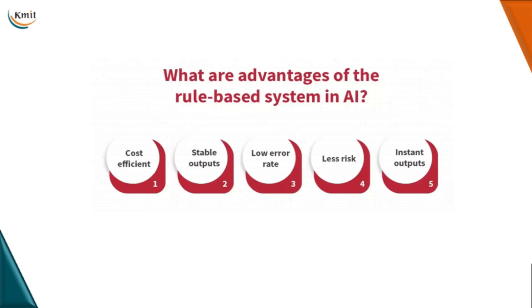Now let us talk about the advantages of rule-based systems. The first advantage is cost efficiency — rule-based systems are generally cost efficient and accurate in terms of results. The outputs generated by the system are dependent on rules, so the output responses are stable, not random. When I talk about low error rate, the coverage for different circumstances may be limited, but whatever scenarios are covered by the rule-based system will provide high accuracy, so the error rate goes down as we have predefined rules.